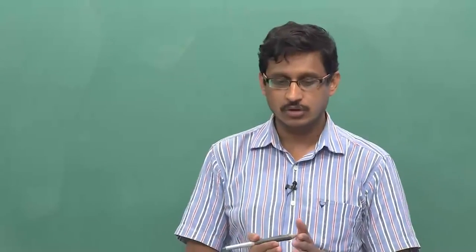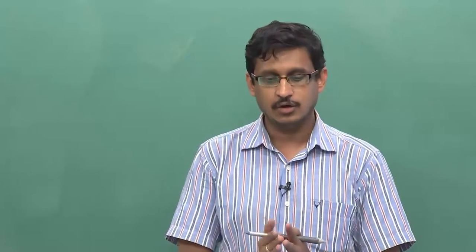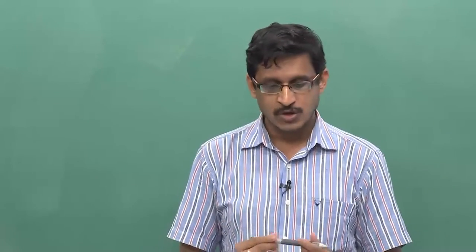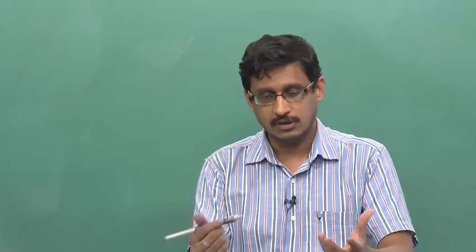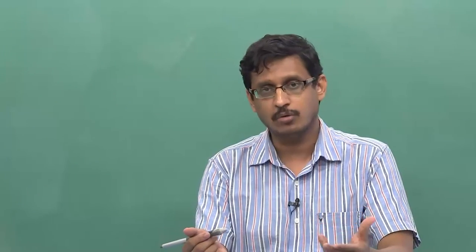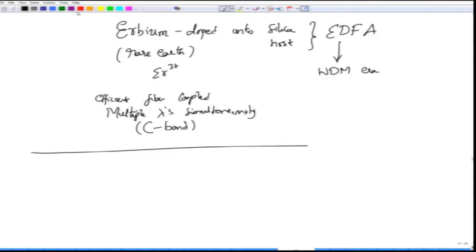We will first discuss erbium doped fiber amplifiers and then talk about the remaining amplifiers in the next module. Both EDFAs and SOAs operate on the principle of stimulated and spontaneous emission. If you recall: materials have certain energy levels — say E1, E2, and E3 — showing three energy levels because that is what is typically found in an erbium doped fiber. From these energy levels you want to pick two and create a population inversion, with E1 being the ground state as the natural part of the two-level system, choosing between E2 and E3.